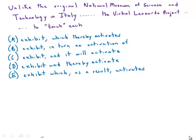In this sentence about the virtual Leonardo project, the prompt has some problems. The prompt says: 'encourages visitors to touch each exhibit which thereby activates the animated functions of the piece.' And the question is, what does this 'which' refer to?